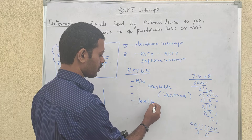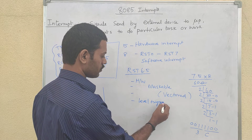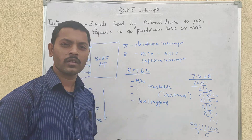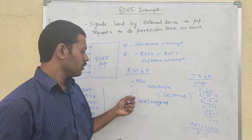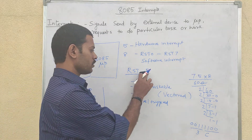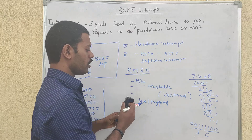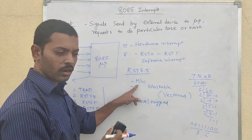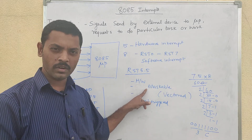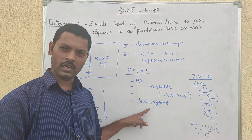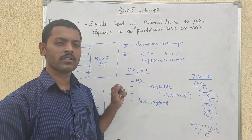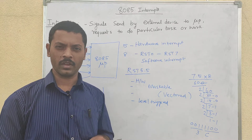RST6.5 is level triggered. Next is RST5.5 — RST5.5 is a hardware interrupt, a maskable interrupt, a vector interrupt, and also level triggered. So RST6.5 and RST5.5 are both level triggered.